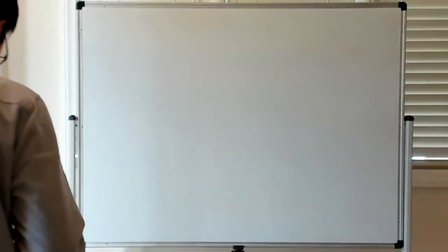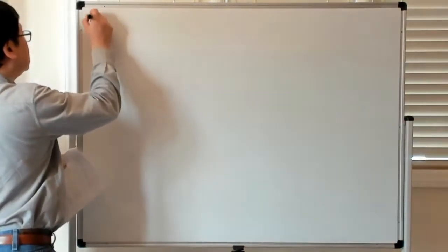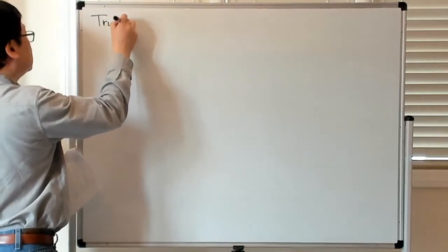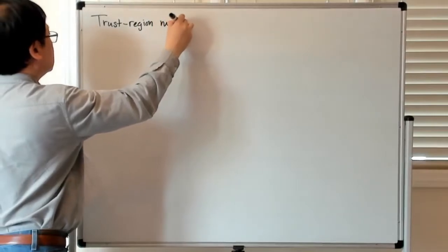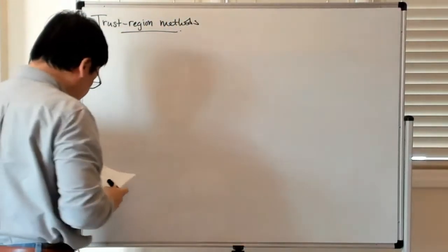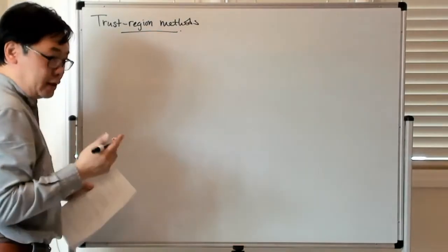OK, so now we're in a position to talk about trust region methods. And let's just start with the case in R^n.